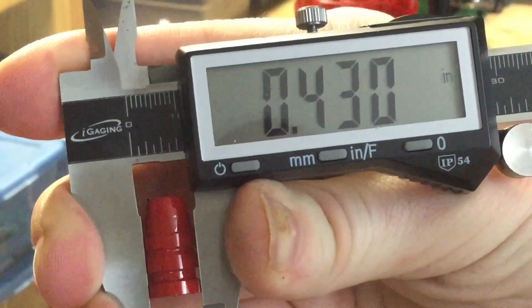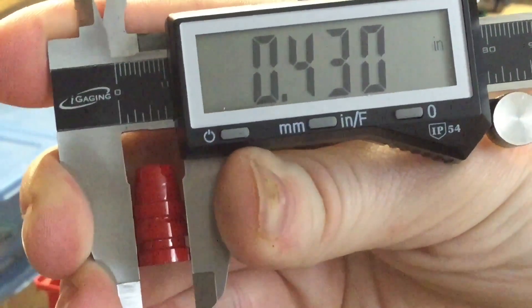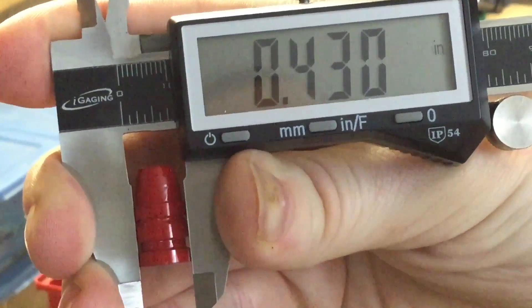As you can see, those driving bands have now been sized down to 0.430 inches, just like we knew they would be from 0.438.